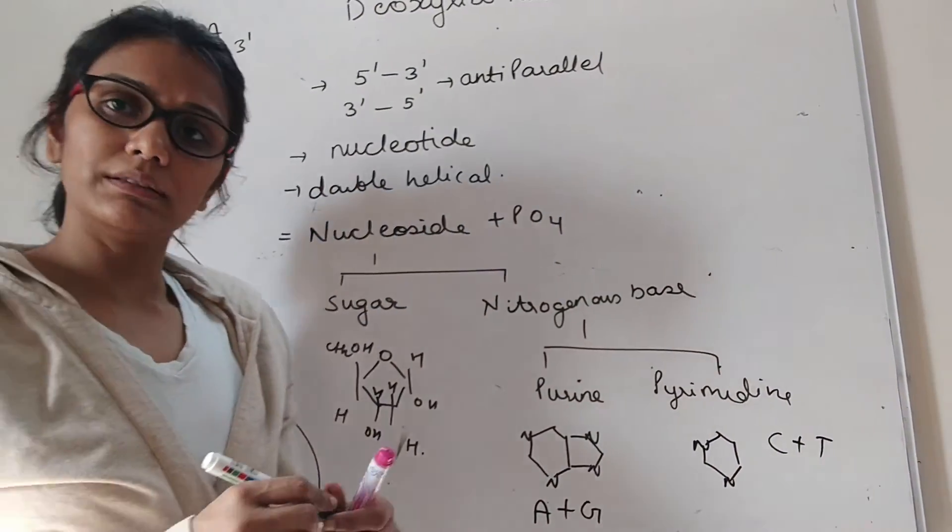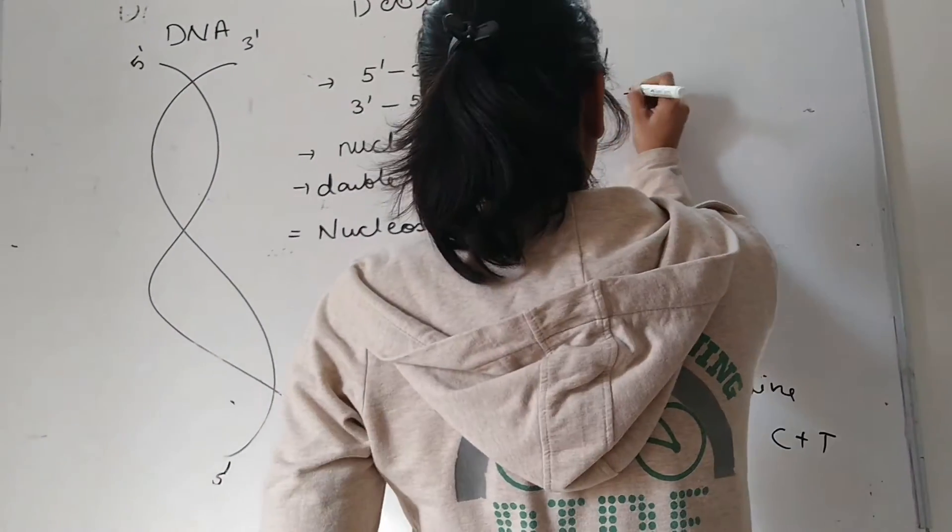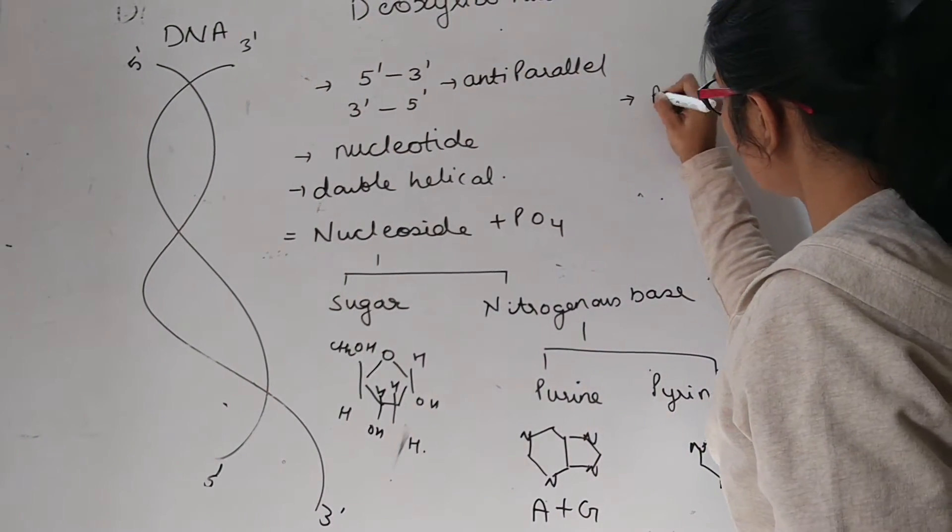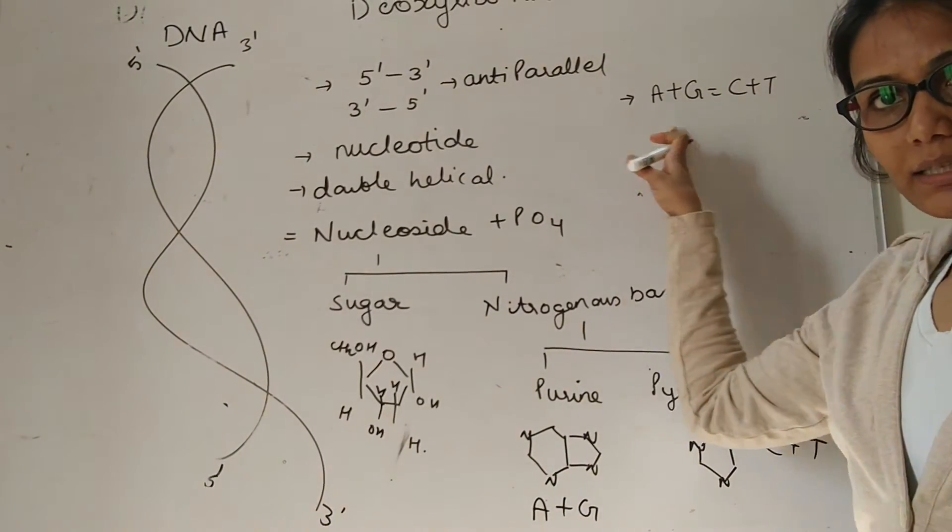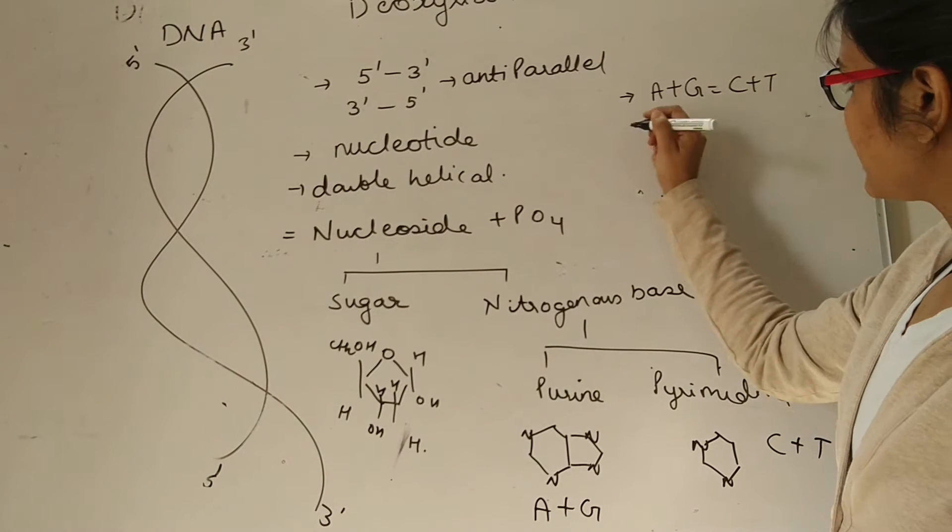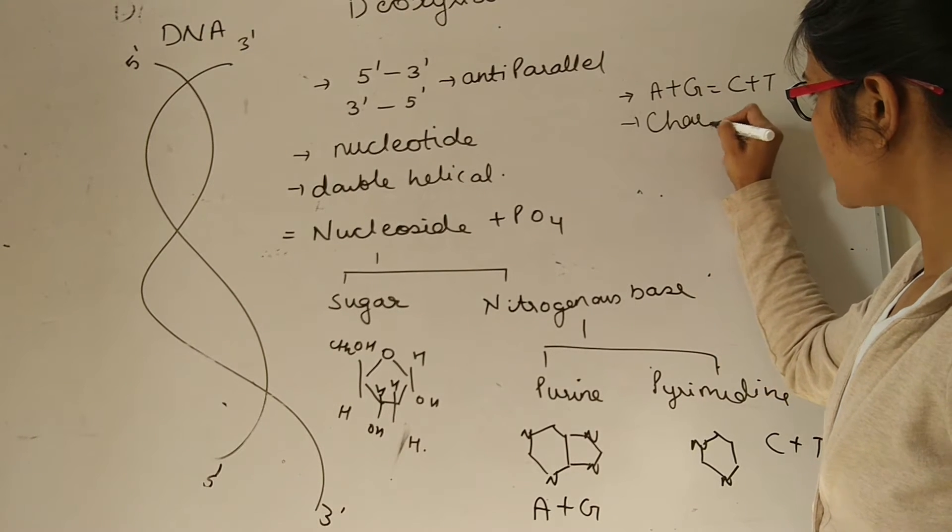There is a rule in this: the total number of purines will be equal to total number of pyrimidines. This rule is called as Chargaff's rule.